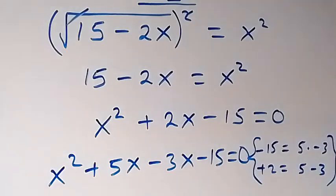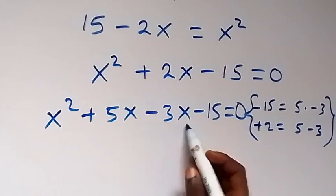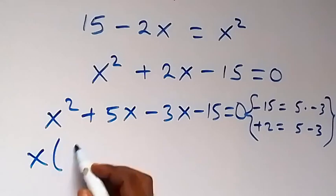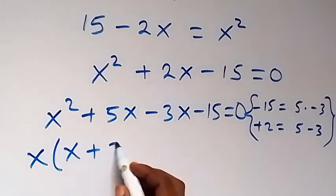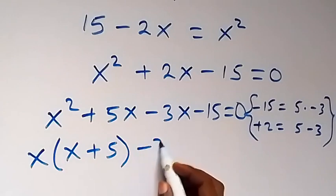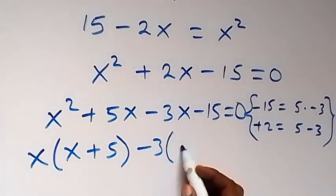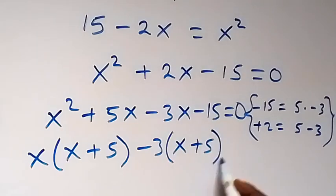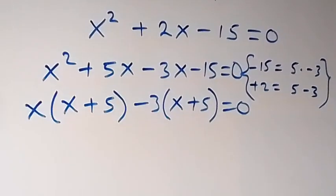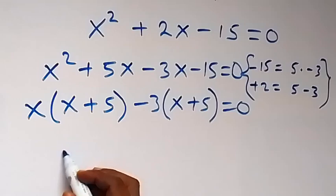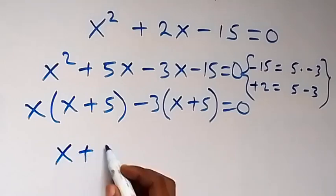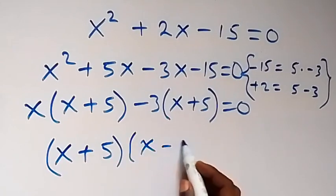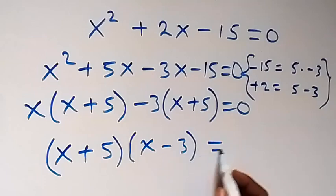Now we can group this together into 2. x is common, so we have x plus 5 left. Here minus 3 is common, so we have minus 3 into bracket x also plus 5 left, which is equal to 0. We have x plus 5 and we factor it out. Then we are left with x minus 3 here, which is equal to 0.